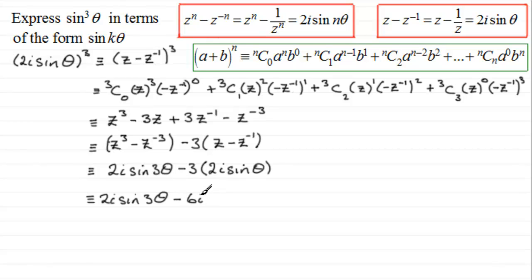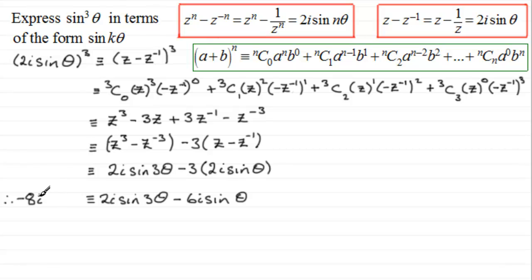Now we expand the left-hand bracket. 2i sine theta all cubed gives 2 cubed which is 8, times i cubed which is minus i, times sine cubed theta — giving minus 8i sine cubed theta. You can see this term is imaginary, and both terms on the right are also imaginary.